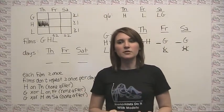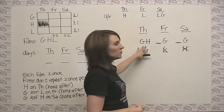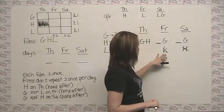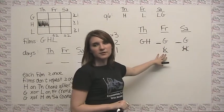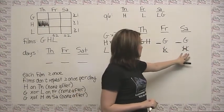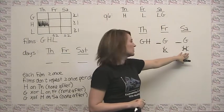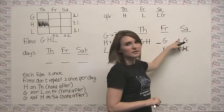Choice A says all three films are shown on Thursday. Well, we don't know that yet. Choice B says exactly two films are shown on Saturday. Well, we know that more than two can't be shown on Saturday, but we don't know whether this is empty yet.